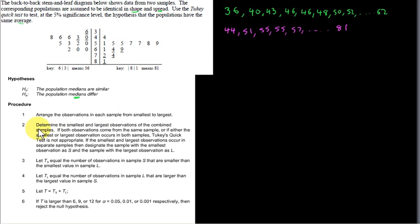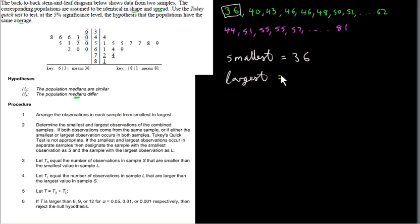The second step is to determine the smallest and largest observations of the combined samples. The smallest observation overall is 36, and the largest is 81. If both of these observations came from the same sample, or if either the smallest or largest occurred in both samples, the two-key quick test would not be appropriate. But here they come from different samples, so we can proceed.